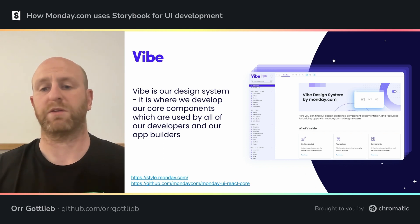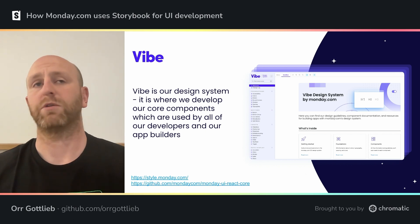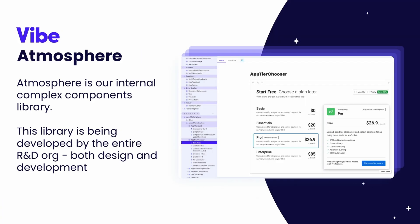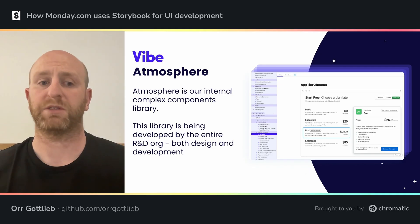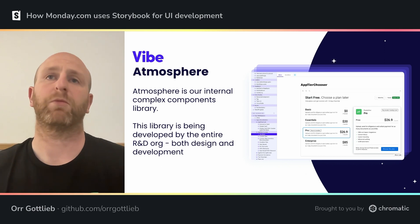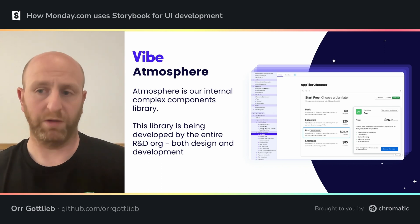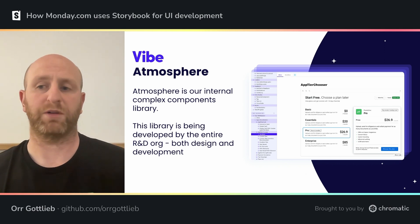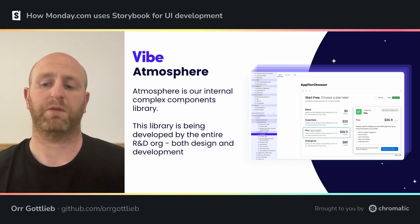You can see it in action at style.monday.com, and of course you can check our GitHub. Atmosphere is our complex components library, such as our boards, pricing pages, person pickers, and everything within the system. This library is being developed by our entire R&D organization and is changing on a daily basis.